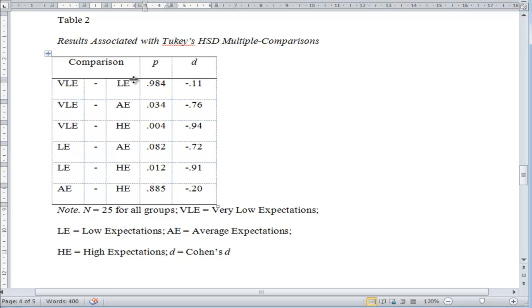The difference between very low expectation and low expectation was not statistically significant, p equals 0.980. I report the Cohen's d anyway. You should always report your effect size, significant or not.